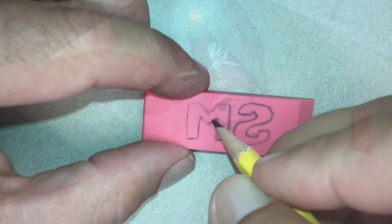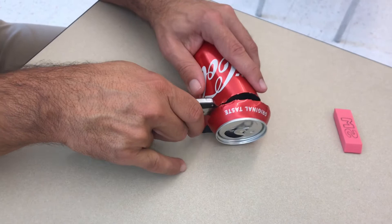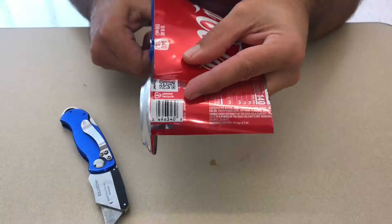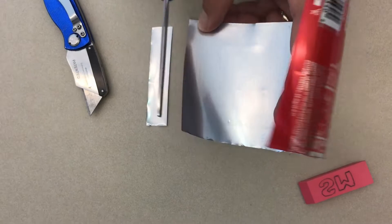To carve the eraser, we're going to make a gouge out of an aluminum can. Be very careful at this stage, as the aluminum is sharp and can cut you. Once the can is opened up, cut off a strip about three-quarters of an inch wide, and then cut it in two.